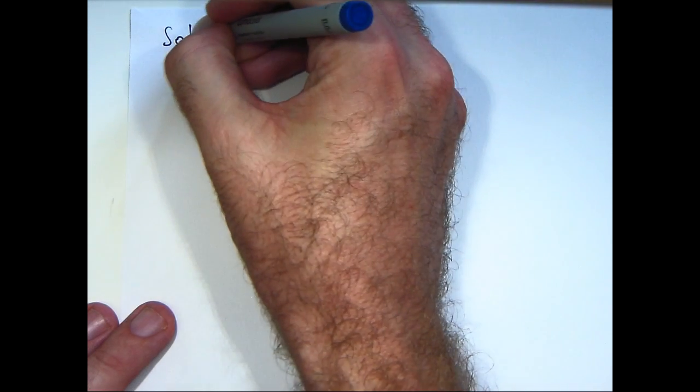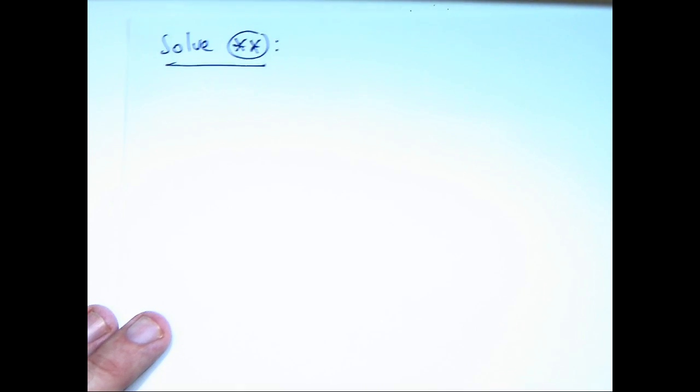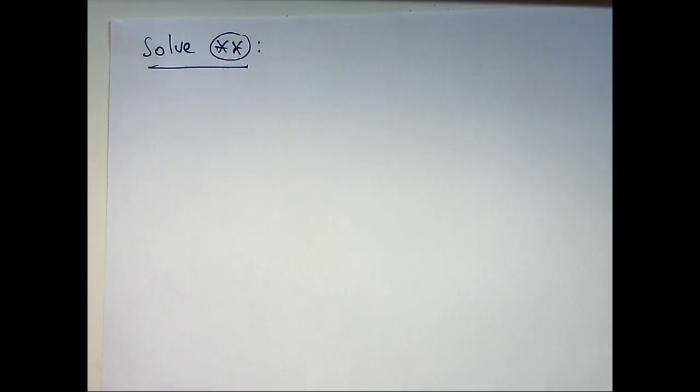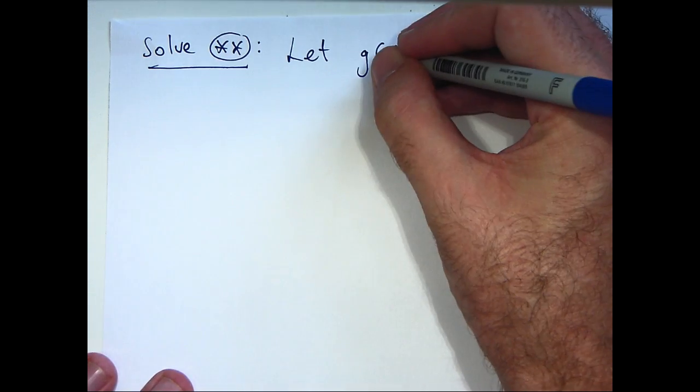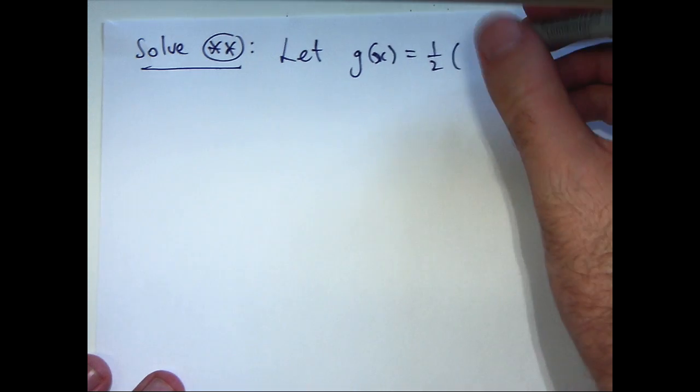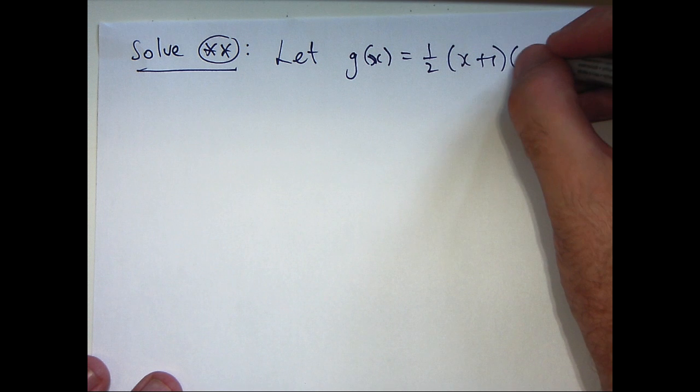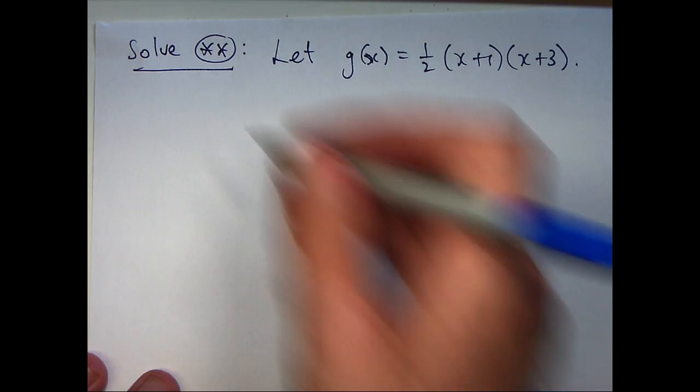So we've simplified accordingly and what we're going to do now is the second step of the process, and that's solve the simpler inequality. Any solution to the simpler inequality will also solve our original inequality. Okay, so to do this I'm going to let g of x be the left hand side of double star and let's sketch the graph of g.